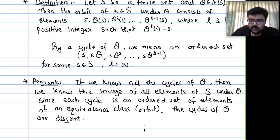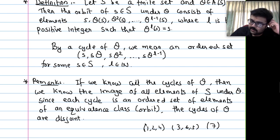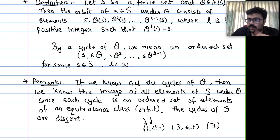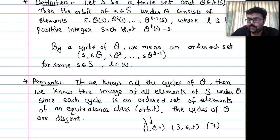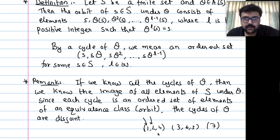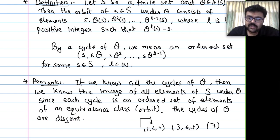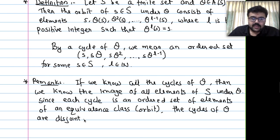The cycles are disjoint — elements of an equivalence class (orbit) form a cycle, and different equivalence classes are disjoint. So the cycles of theta are disjoint. In the example: cycle (1,2,4), cycle (3,6,5), and cycle (7) are all disjoint — theta has exactly these 3 cycles.